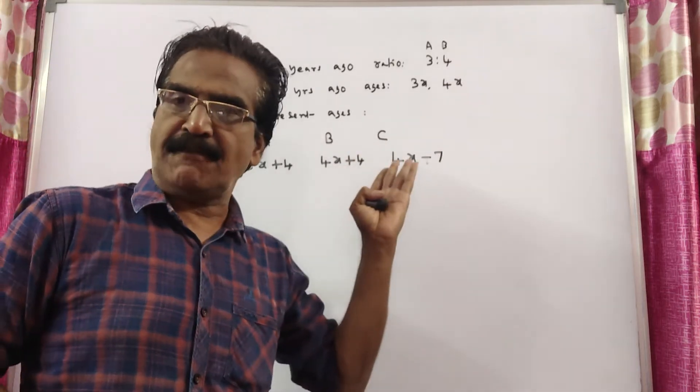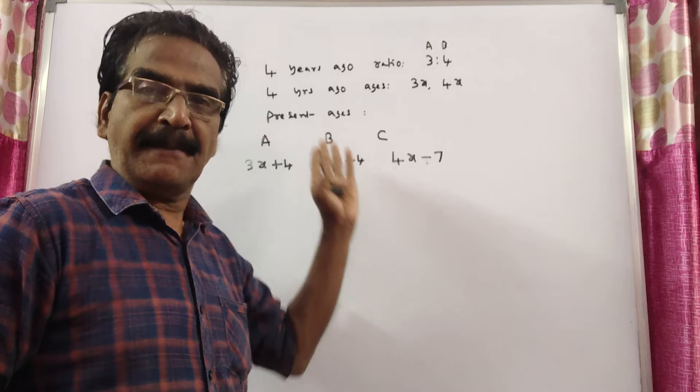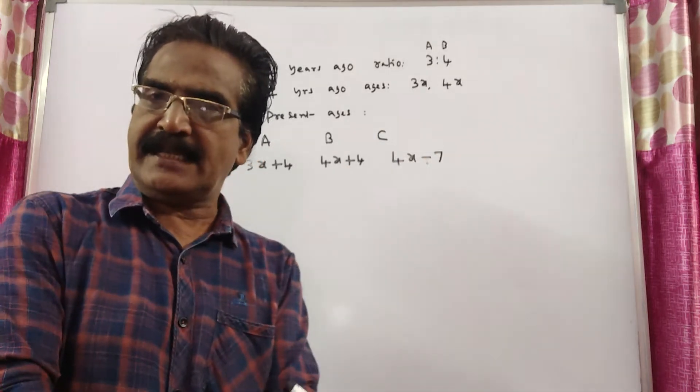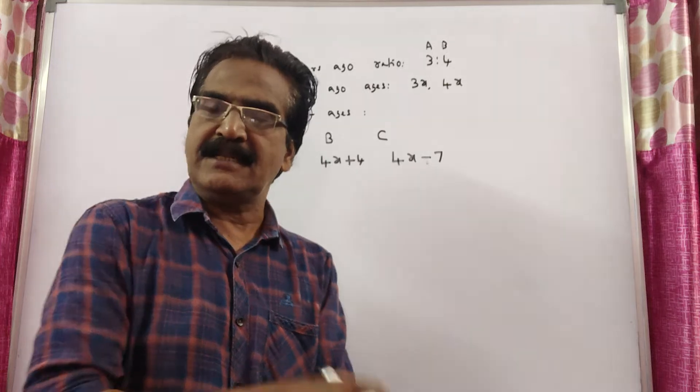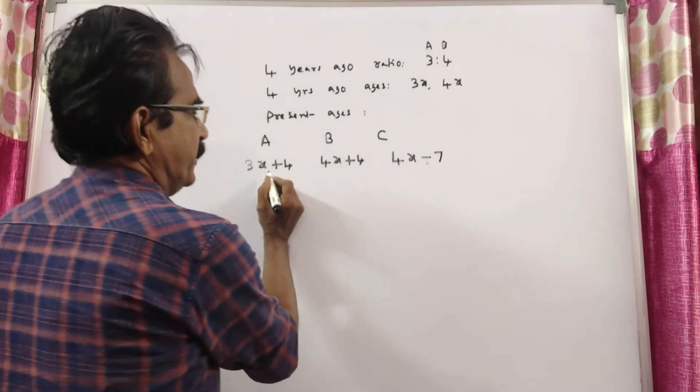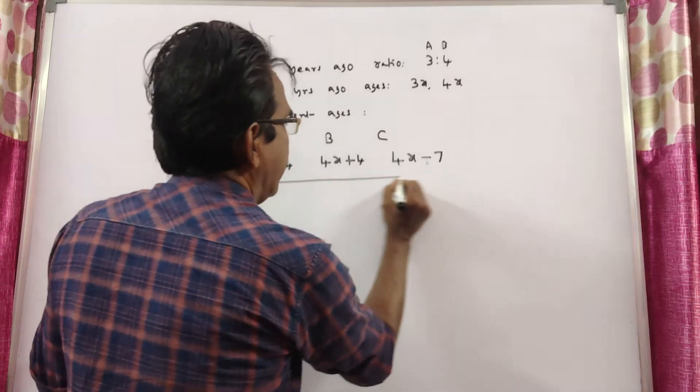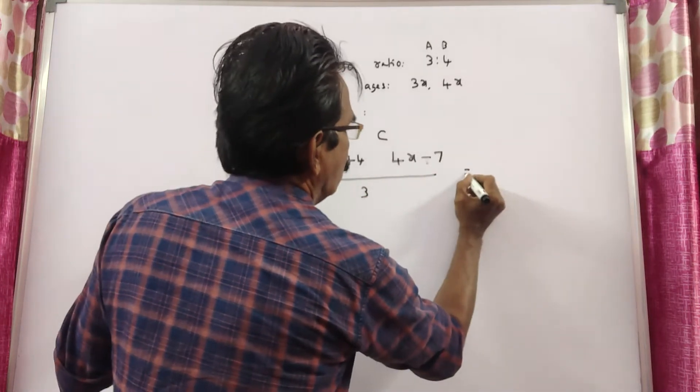So now we have the ages of present ages of A, B and C. And it is given that average ages of A, B, C is 26 years. So this plus this plus this by 3 is equal to 26.